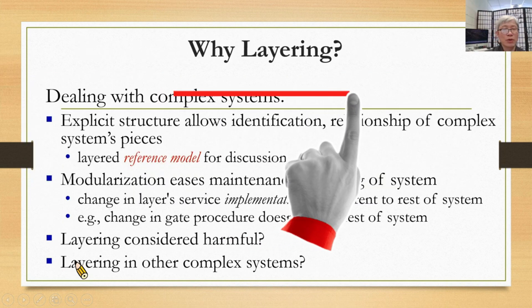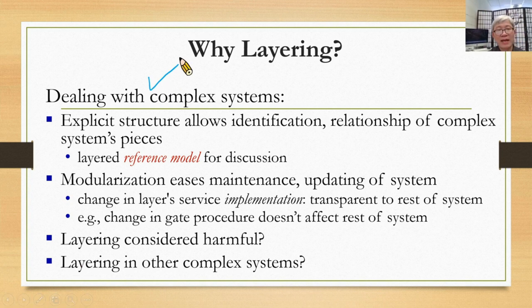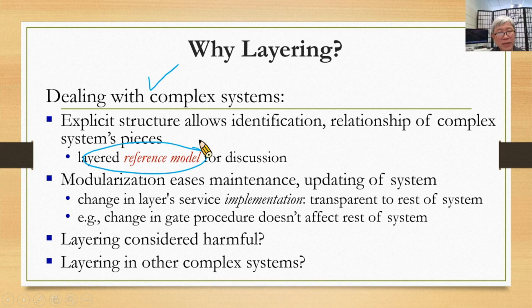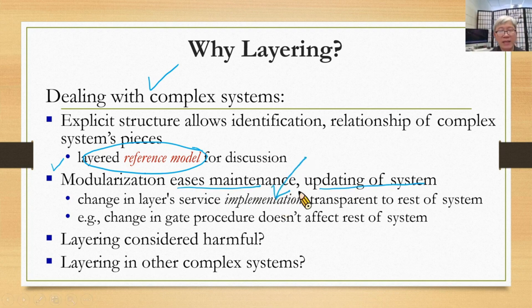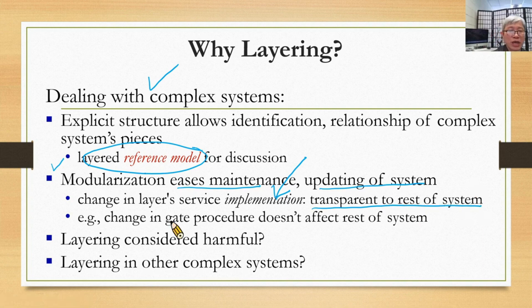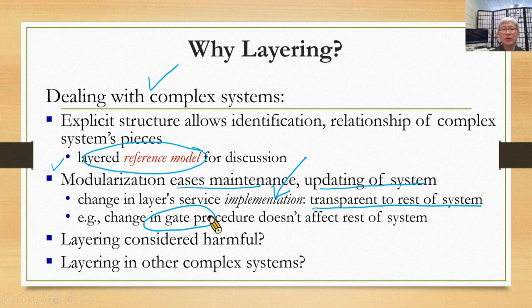Why layering? We should deal with a complex system, so we should rely on the concept of a layer to have a layer reference model. With a layer reference model, we can have several modules. Modularization can ease maintenance and updating of a system. If we want to change some implementation of a layer, then this change will be transparent to the rest of the system. For example, if we want to change something in the gate procedure in the case of air travel, then it won't affect the rest of the system. Is layering harmful? Sometimes, if we don't have full consideration, it can be. But if we have full consideration, we can avoid the effect of harmful factors.